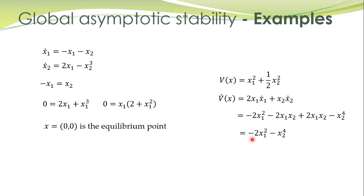So what is the conclusion? This V dot is negative definite. What about stability of this equilibrium point? It is globally asymptotically stable. That is, all the initial conditions, corresponding to all initial conditions, trajectories will finally converge to this equilibrium point.